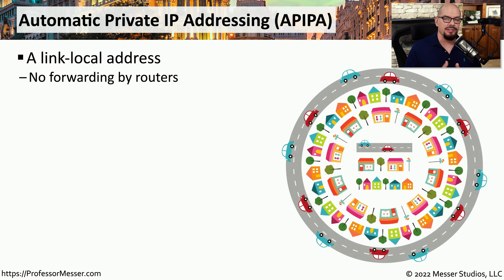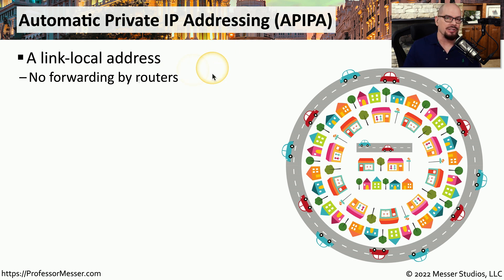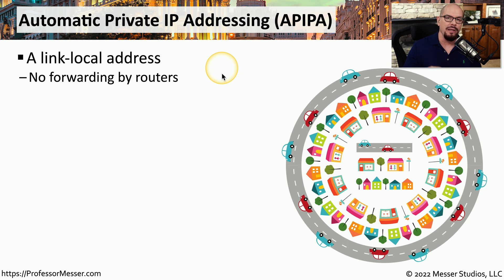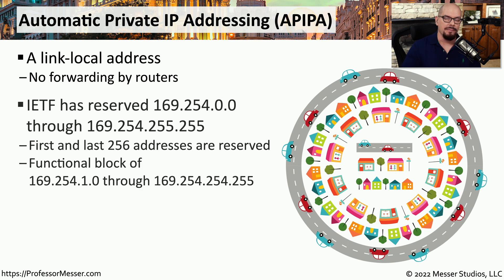There may be times when your device is configured to obtain a DHCP address, but there's no longer a DHCP server on your local network. In those situations, your device will be assigned an APIPA address, which stands for Automatic Private IP Addressing. This is sometimes referred to as a link local address, because any device configured with an APIPA address can only communicate with other devices on the local network and cannot communicate outside of it.